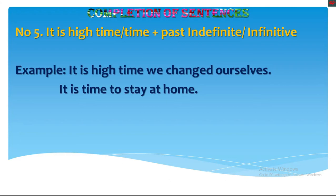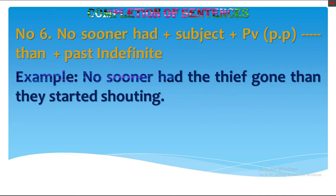Rule number 6 is an example of an inversion — an inverted sentence. Whenever we start a sentence with an adverbial, we may get an inversion. The structure is: 'No sooner had' plus subject plus past participle of the principal verb, plus 'than' plus past indefinite. Example: 'No sooner had the thief gone than they started shouting.' This is a nice example of an inverted sentence.